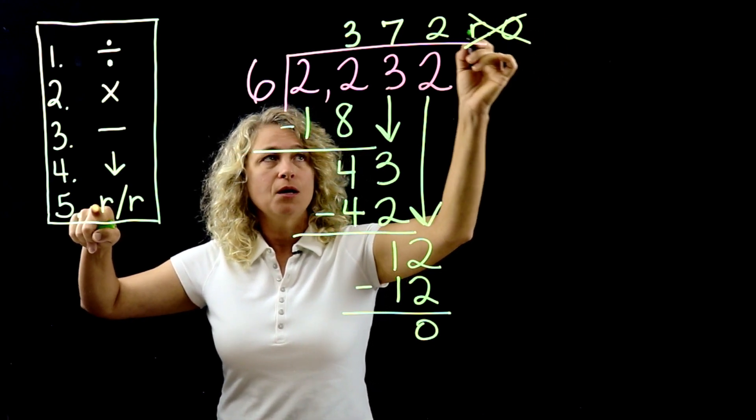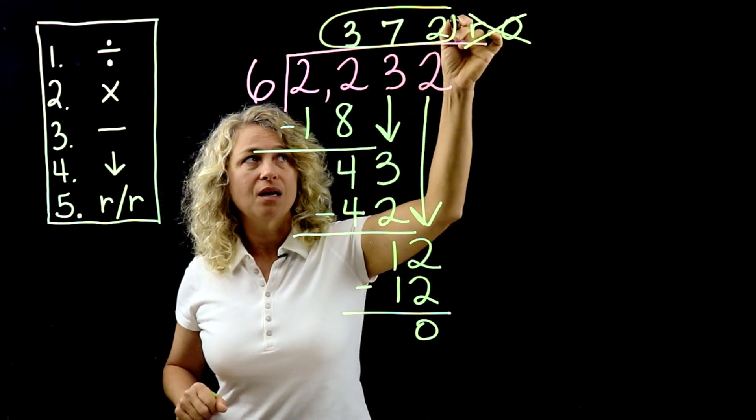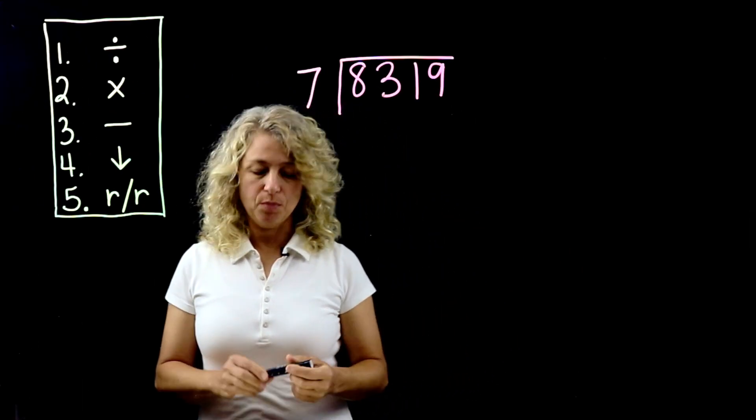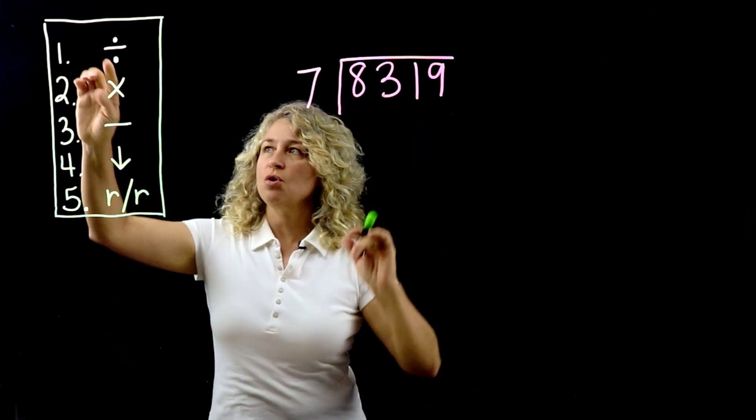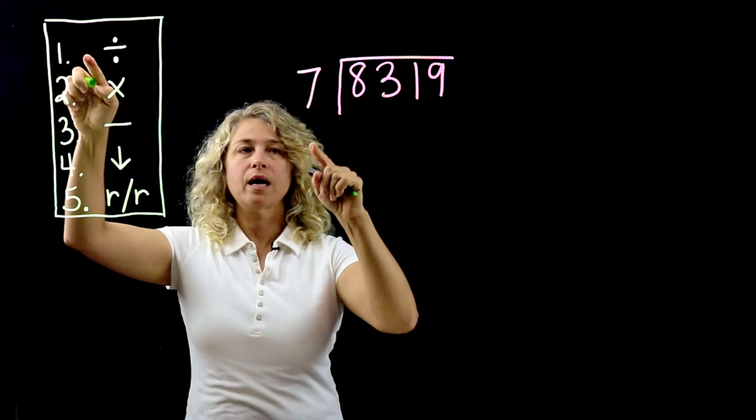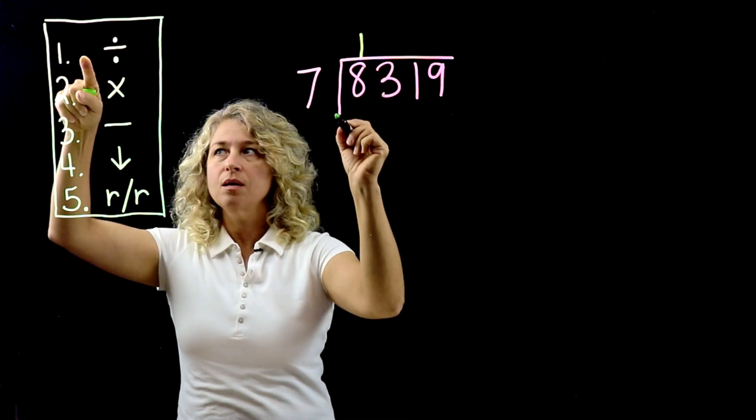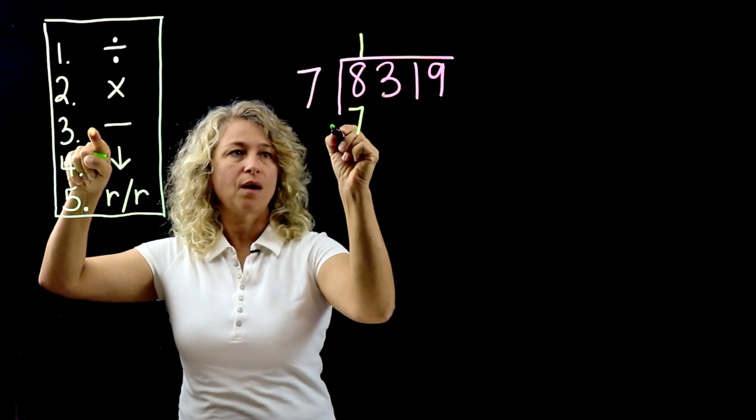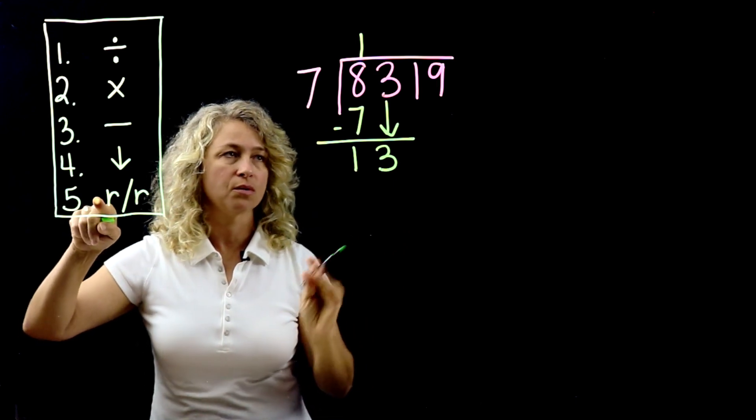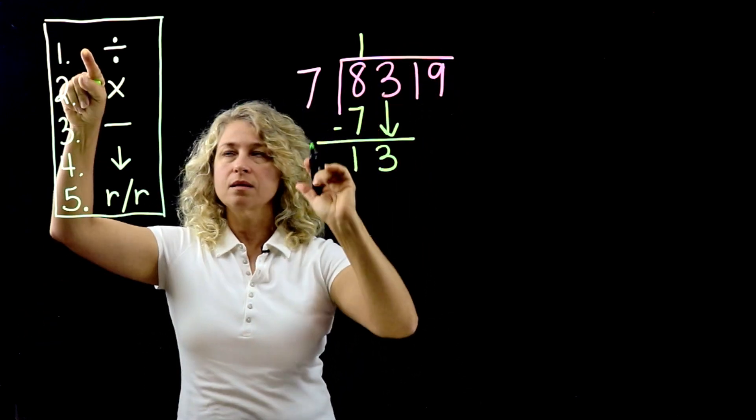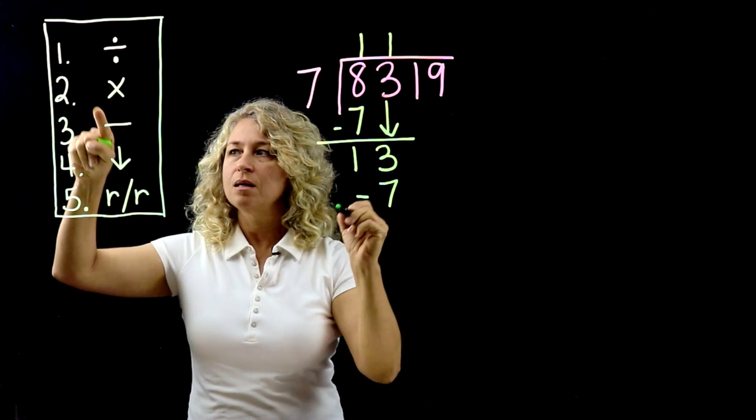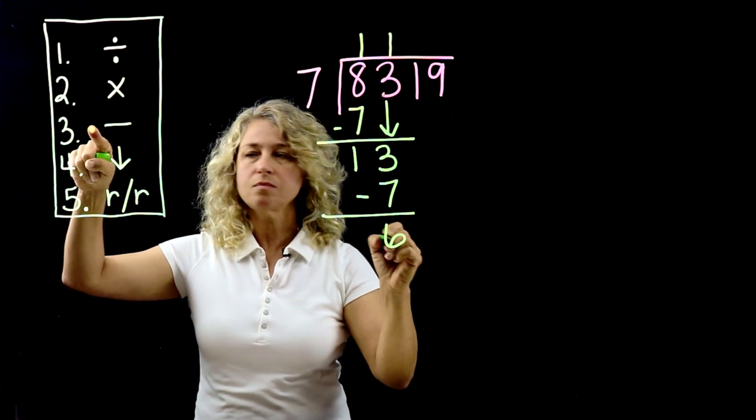Okay, so we're going to try another example. So here's another one. We'll start with the same step. How many times will 7 fit into the first number? One time. All right, so we're dividing 7 into 8, one time. Multiply, subtract, bring down. Repeat or remainder? Definitely repeat. All right, 7 can go into 13 one time. Multiply, subtract, bring down.